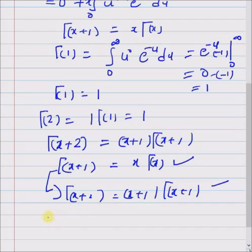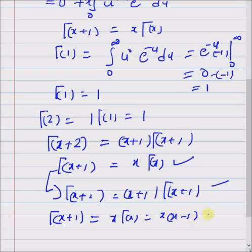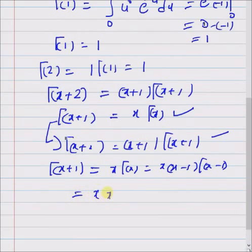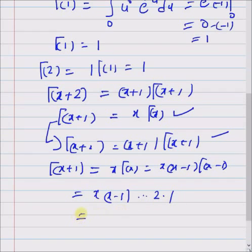By induction, gamma(x+1) equals x times gamma(x), which equals x times (x-1) times gamma(x-1). Continuing this progression, we get the product x times (x-1) times ... times 2 times 1, which is nothing but x factorial. Hence gamma(x+1) equals x factorial.